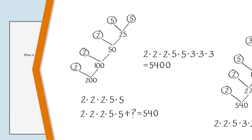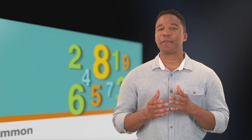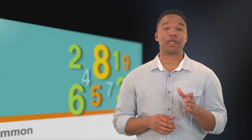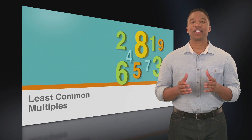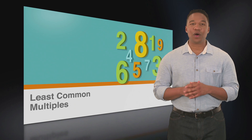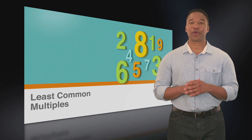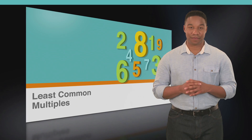This makes the fifth answer choice the one to choose. Remember that when you're looking for the least common multiple of two or more numbers, you should count every number and be careful when you tally. That concludes our lesson on least common multiples. These special multiples will also be useful when working with fractions, so keep prepping and practicing.